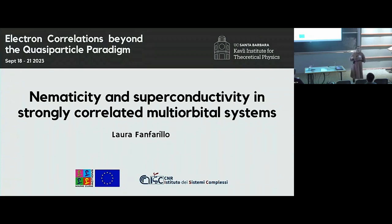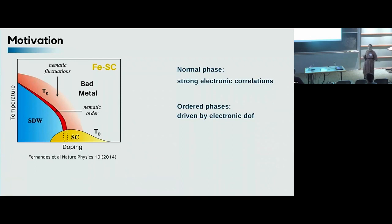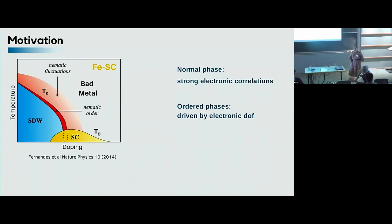I'm talking about the bad metallic phase and what we can understand about iron-based superconductors starting from that point of view. The question is motivated by the observation that in many quantum materials you have a high-temperature bad metallic phase — you can call it a strange metallic phase, it's an unusual metal — and by lowering the temperature you have the emergence of a number of different phases that can be accessed by tuning a tuning parameter, including unconventional superconductors.